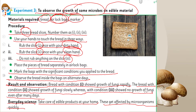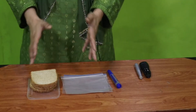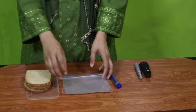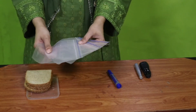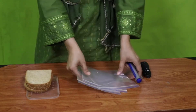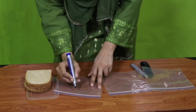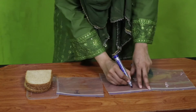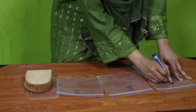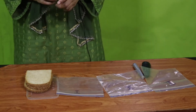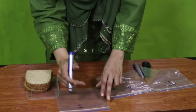Now let's perform the experiment. We need three bread slices — one, two, and three — and three airlock bags numbered one, two, and three. First I will number the airlock bags: number one, number two, and number three. Then I will write down the conditions on each bag. The first condition is: dirty hands.